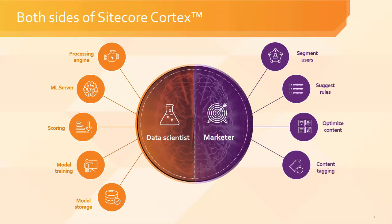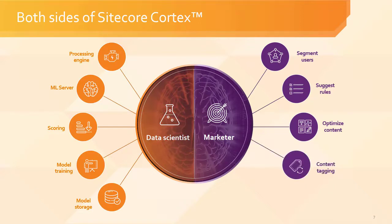Cortex will also perform content tagging, which will remove the annoying manual labor around tagging your content — a long and error-prone process that is now streamlined, consistent, and accurate through the automation of tagging of people, places, things, and facts within your content. This will enable SEO efficiency and accuracy right out of the box.